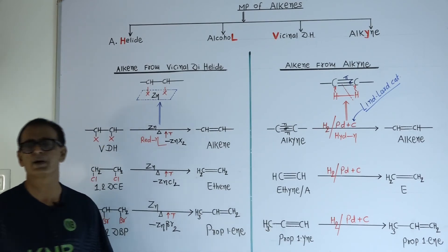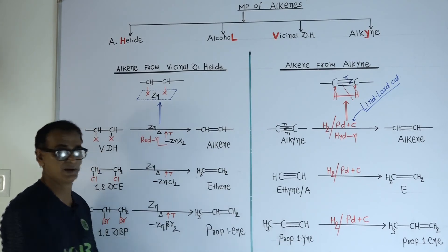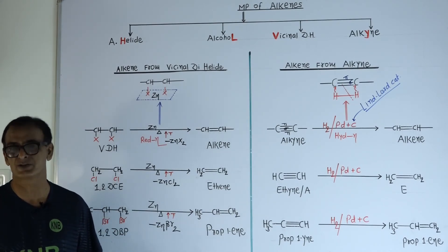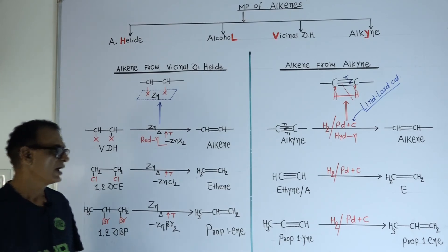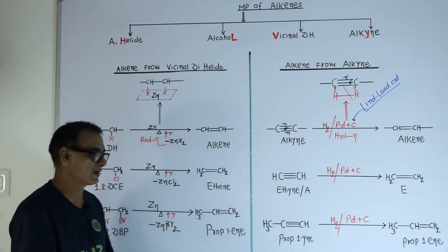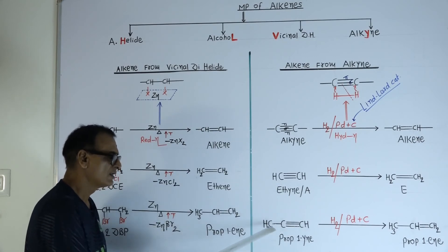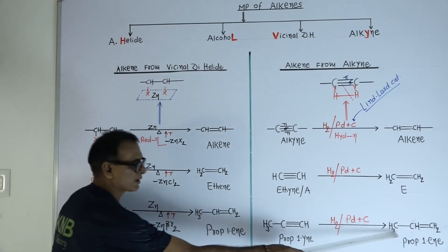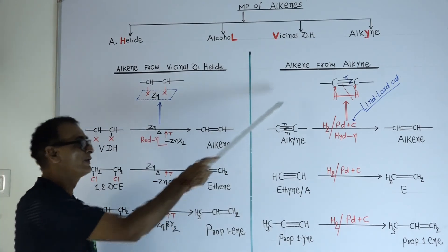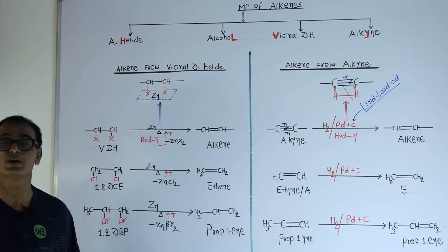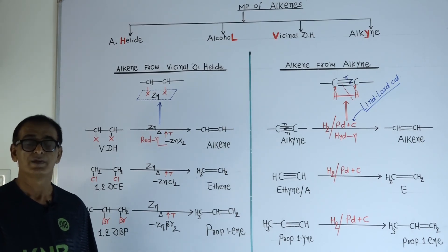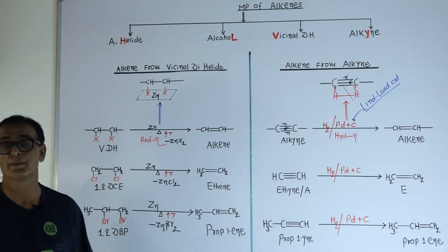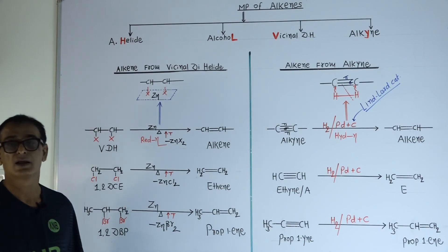Next example: CH₃ single bond C triple bond CH. The name of this compound is prop-1-yne. When this compound is heated with hydrogen in the presence of catalyst like palladium plus carbon, as per the mechanism one pi bond will break, one hydrogen will add to each carbon. Product is CH₃ single bond CH double bond CH₂. The addition of hydrogen is known as hydrogenation. So we can prepare alkene from alkyne by hydrogenation, also known as reduction of alkyne.